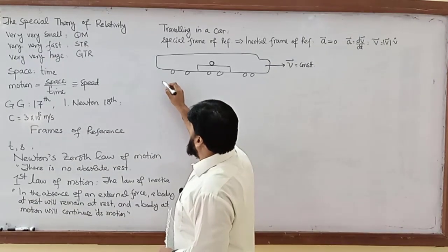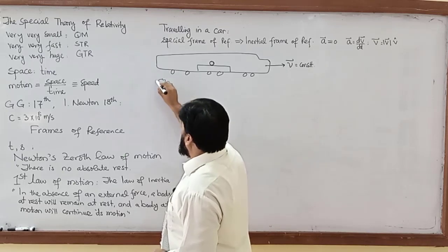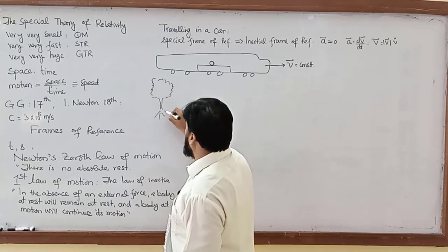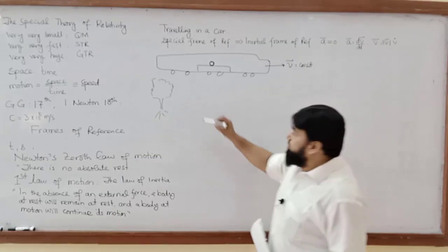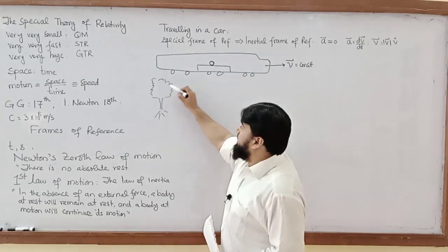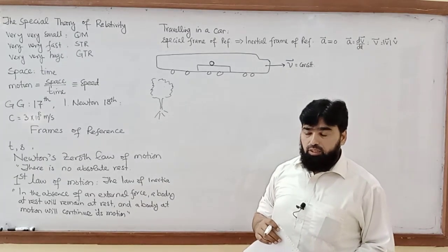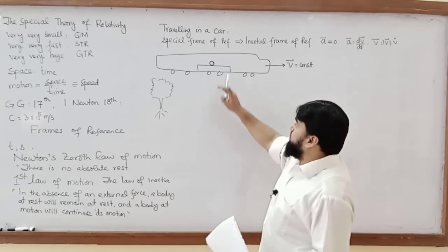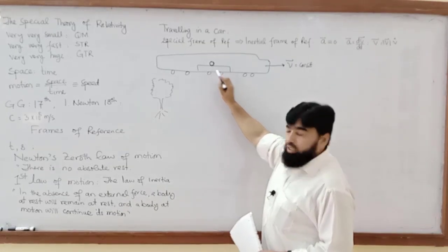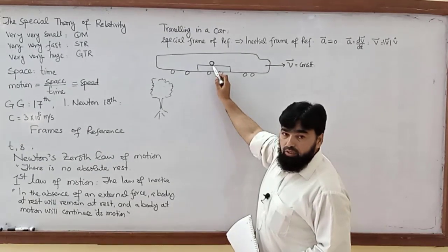If we consider another reference — let's say a tree — from the reference of the tree, is the ball moving or not? The body is moving, because the ball is inside the train, so whatever velocity the train has, the ball is moving with that same velocity.